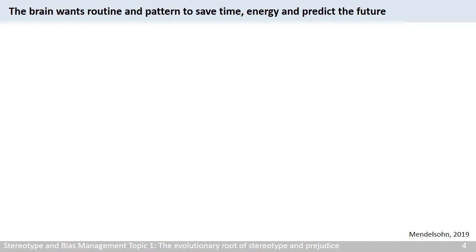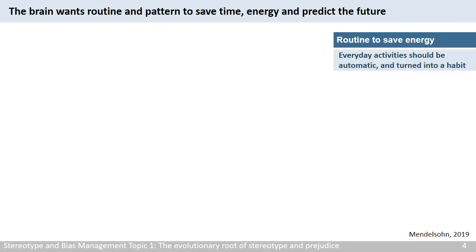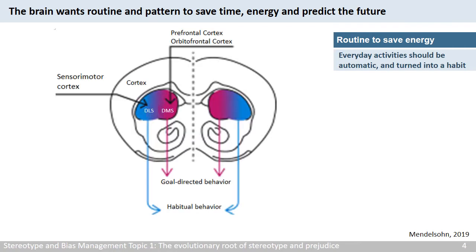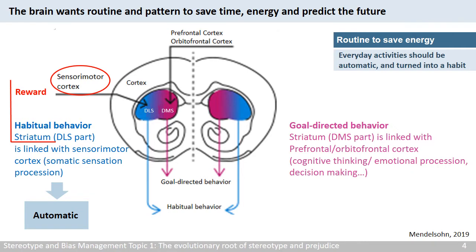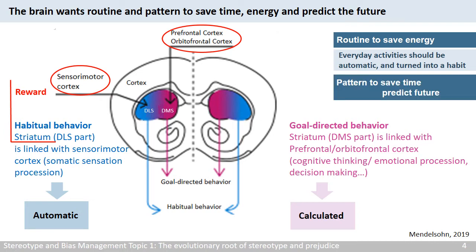Stereotype could be understood by knowing one important characteristic of our brain: it wants routine and pattern, to save time, energy, and predict the future. Routines save energy so the brain can spare resources for other tasks. That is why much of our everyday activities should be automatic and turn into a habit. For habitual behaviors, the striatum, often associated with reward, is linked with the sensory motor cortex — this optimizes automatic execution. For goal-directed behaviors, the striatum is linked with the prefrontal cortex, the head office of cognitive thinking, emotional processing, and decision-making — associated with calculated execution. So the brain wants routine to save energy, and also wants patterns to save time and predict the future.